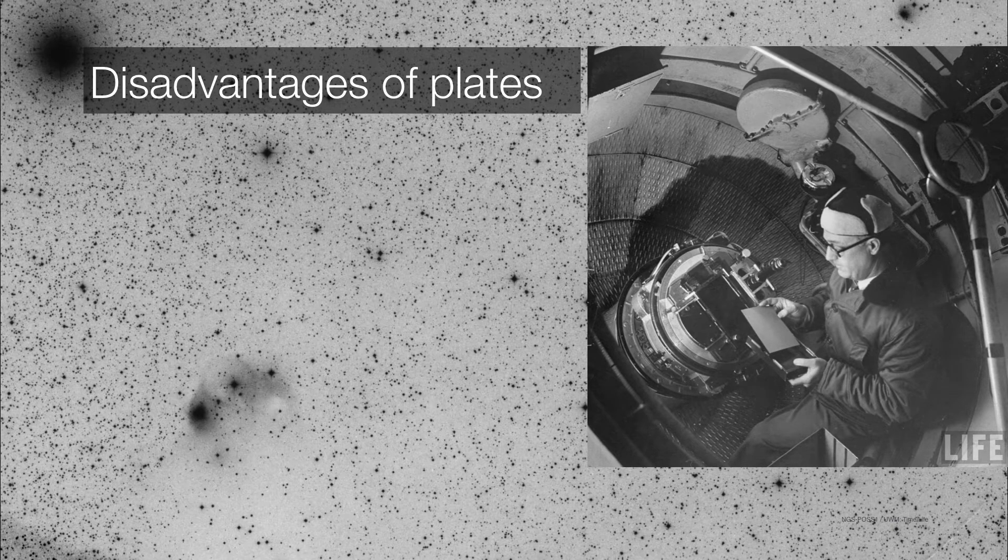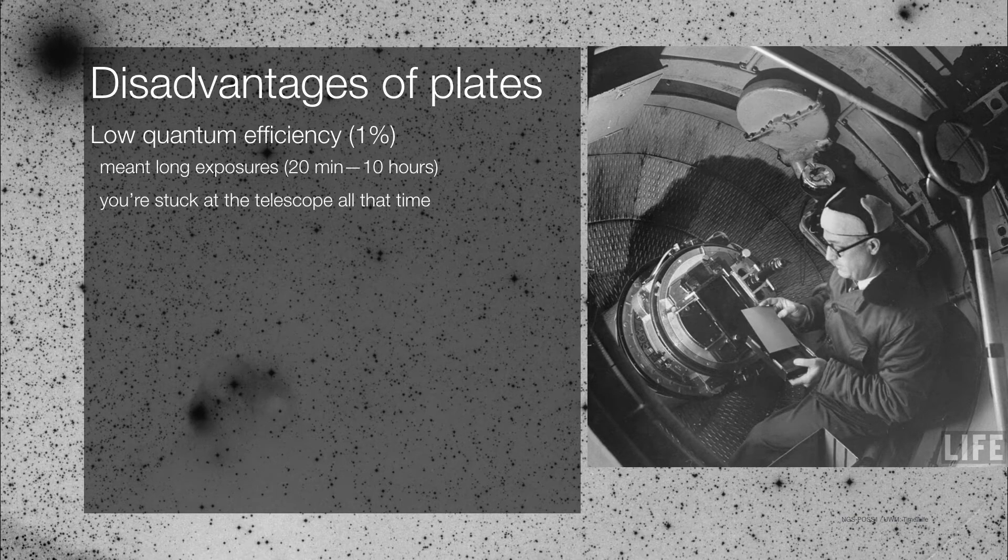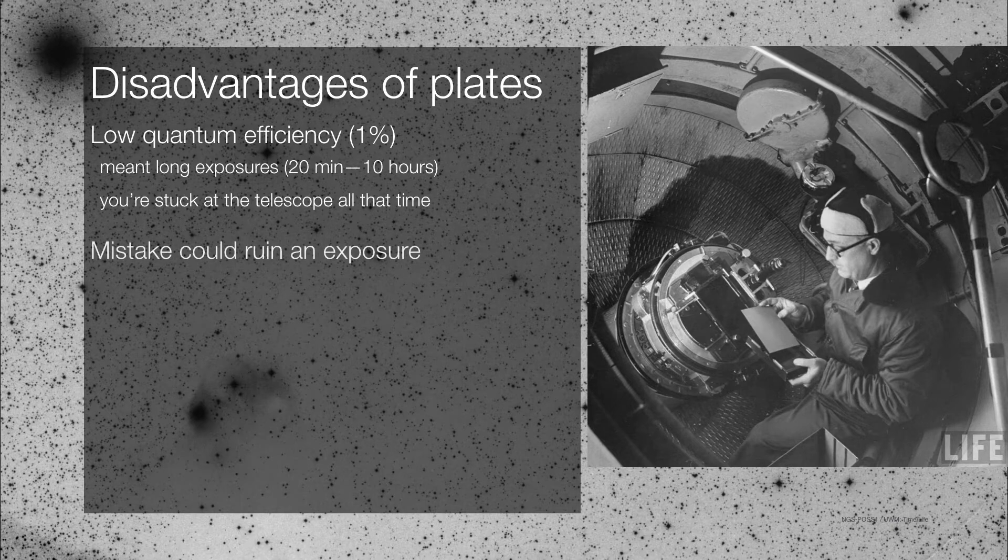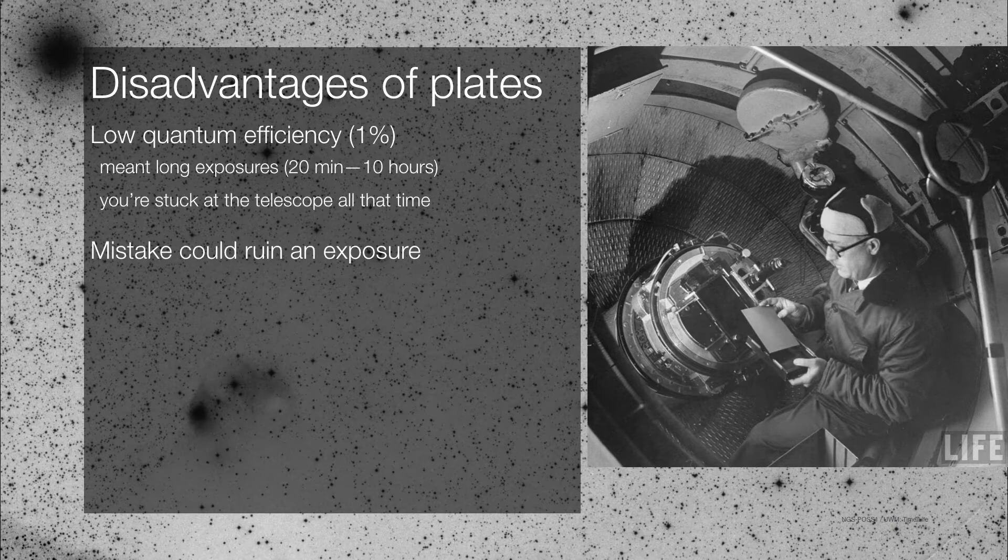The photographic plates have several disadvantages, not the least of which is the fact that they have a low quantum efficiency. So if you needed to capture something that was particularly dim and faint, it meant that you would have to spend literally the entire night at the telescope taking an exposure. And you better hope that you don't make any mistakes because if you were to make a mistake and move the telescope into the wrong direction, you've ruined your exposure and you would have to start all over again. Or if you were in the middle of a very long exposure, you may have to wait until the following night. And even then you may have to wait even longer if it gets cloudy.